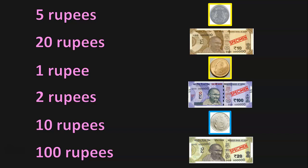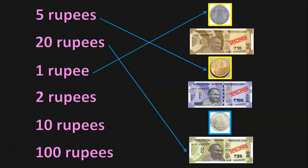5 rupees — we have a 5 rupee coin. 20 rupees — we have a 20 rupee note. 1 rupee — we have a 1 rupee coin. 2 rupees — we have a 2 rupee coin. 10 rupees — we have a 10 rupee note. 100 rupees — we have a 100 rupee note. Interesting, isn't it? Let us do the next activity.